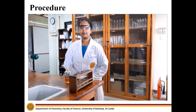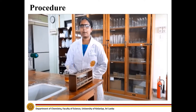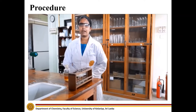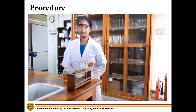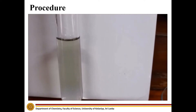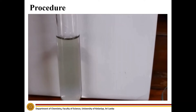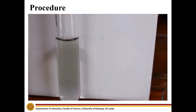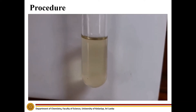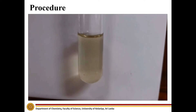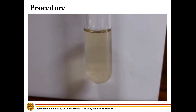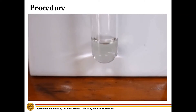Let's repeat the previous experiment by adding acidic potassium dichromate instead of acidic potassium permanganate. We can see a pale green color in the test tubes. The chemical solutions in the test tubes contain acetaldehyde, benzaldehyde, and acetone.